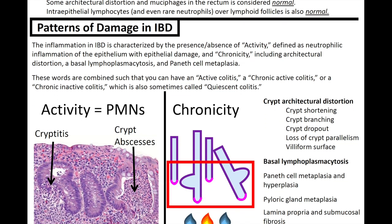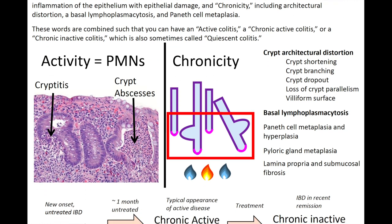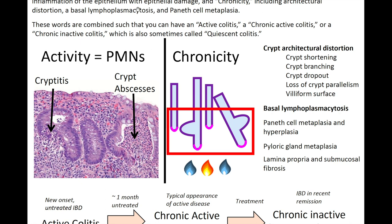We'll go over some patterns of damage seen in inflammatory bowel disease. Inflammation in IBD is characterized by the presence or absence of activity. Activity is defined as neutrophilic inflammation of the epithelium with epithelial damage and chronicity, which includes architectural distortion, basal lymphoplasmacytosis — when those crypts lift off the muscularis layer — and Paneth cell metaplasia. These combine to form active colitis, chronic active colitis, or chronic inactive colitis, also called quiescent colitis.